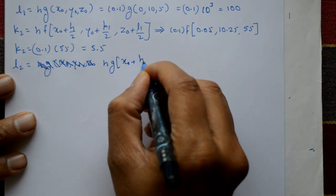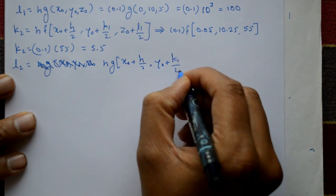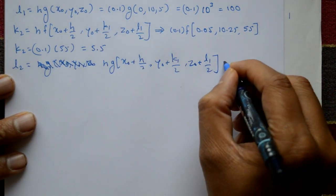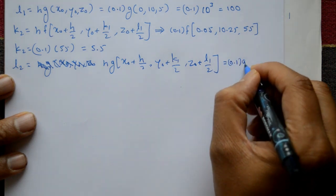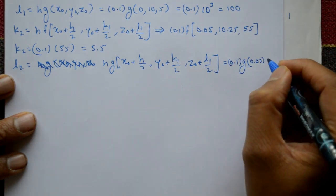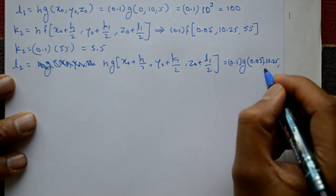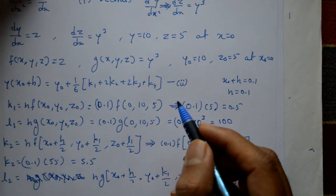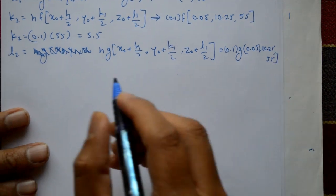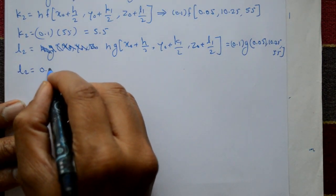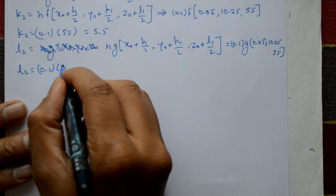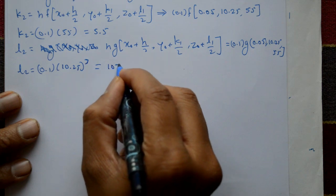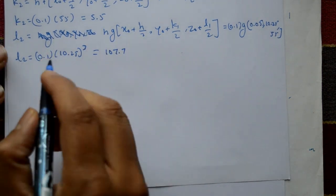l2 = h · g(x₀ + h/2, y₀ + k1/2, z₀ + l1/2) = 0.1 × (10.25)³. Since g(x,y,z) = y³, l2 = 0.1 × (10.25)³ = 107.7.